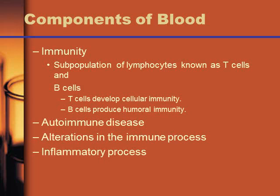Immunity is based on T lymphocytes — thymus lymphocytes — and B lymphocytes — bone marrow lymphocytes. T cells develop cellular immunity, which is passed down from your mother at birth. B cells produce humoral immunity, which you develop through exposure. Your humoral immunity can be stronger than your parents' — it depends on what you're exposed to.